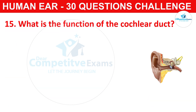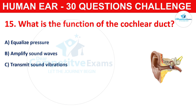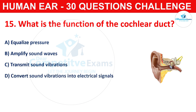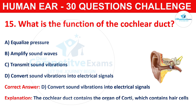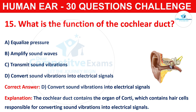Question number fifteen: what is the function of the cochlear duct? Your options are equalize pressure, amplify sound waves, transmit sound vibrations, or convert sound vibrations into electrical signals. The correct answer is D, that is convert sound vibrations into electrical signals. The cochlea contains the organ of Corti, which has hair cells responsible for converting sound vibrations into electrical signals.